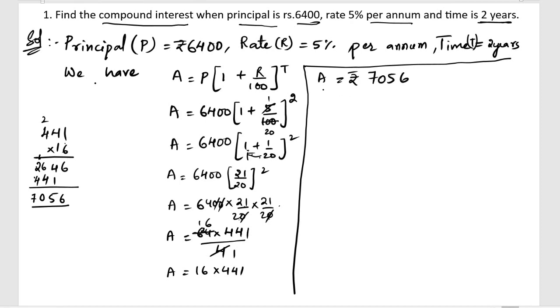Next, after finding the amount, we need to find out the compound interest. So, for finding the compound interest, compound interest equals, we need to subtract, amount minus principal.